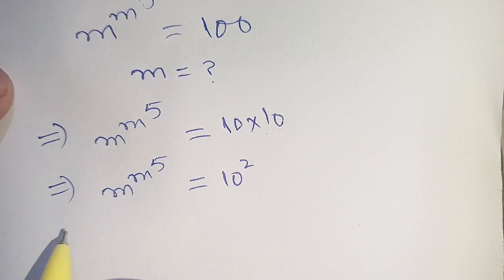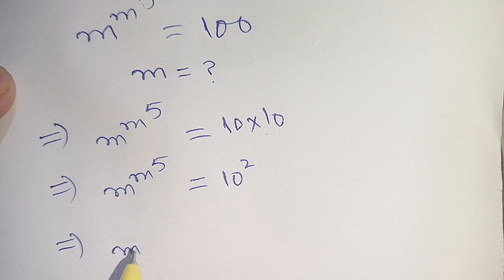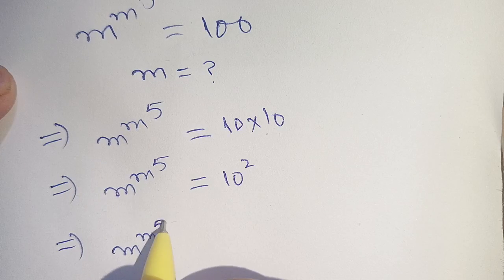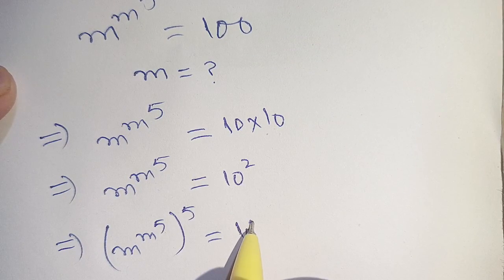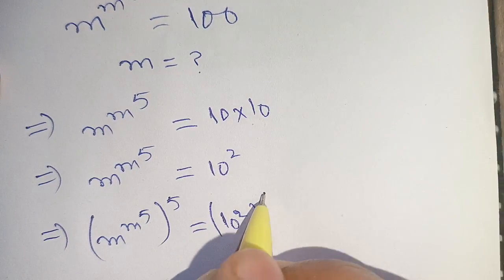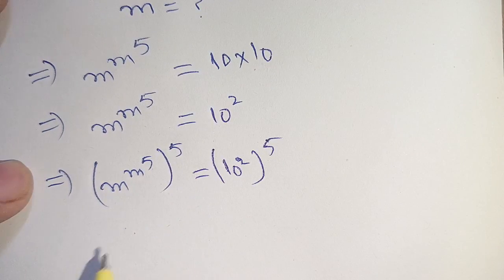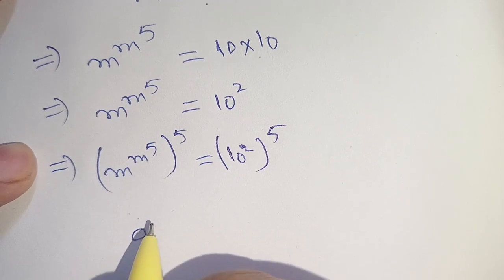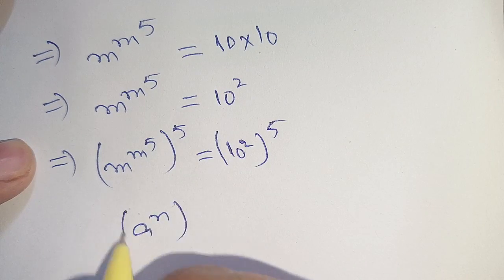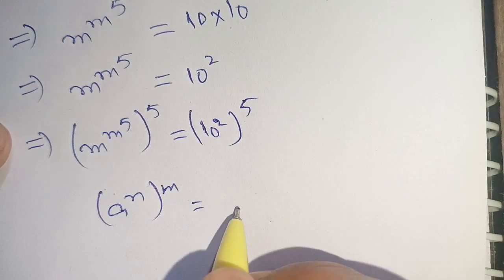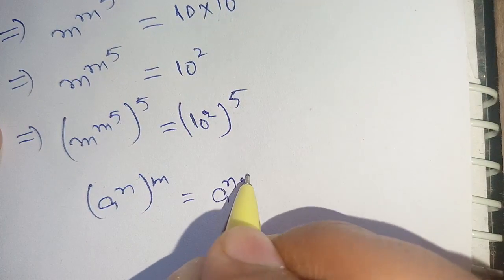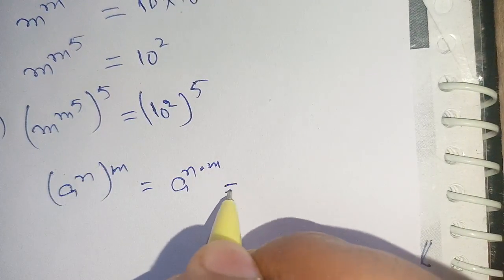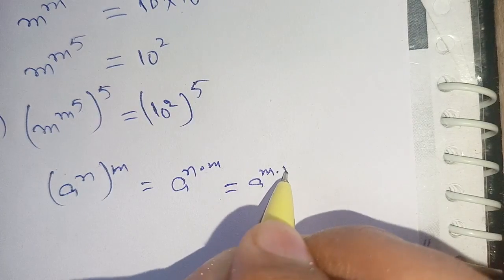Now on the next step we can write this equation as m raised to the power m raised to the power 5, bracket raised to the power 5, is equal to 10 raised to the power 2, bracket raised to the power 5. We know that a raised to the power n, bracket raised to the power m, is equal to a raised to the power n times m, which equals a raised to the power m times n.